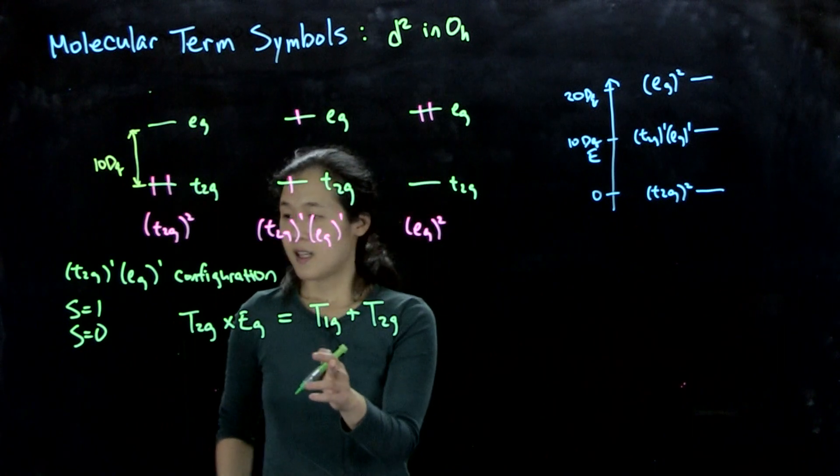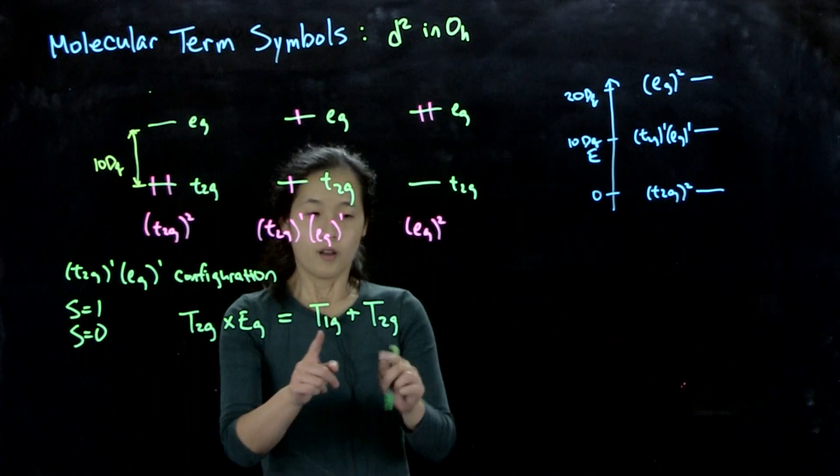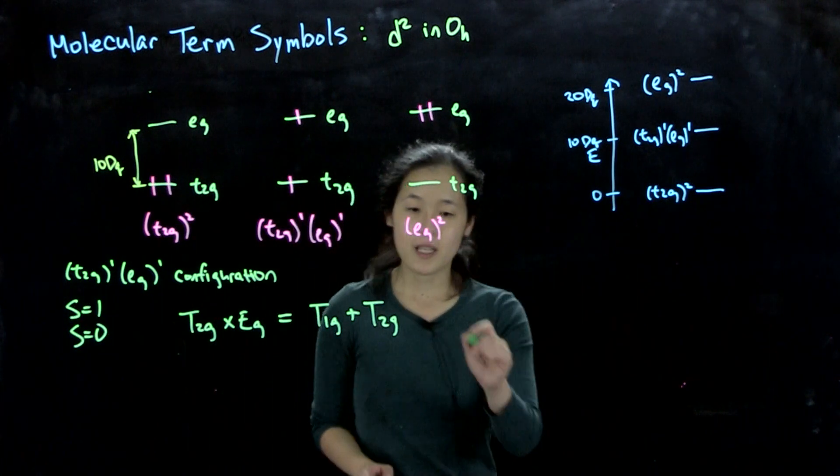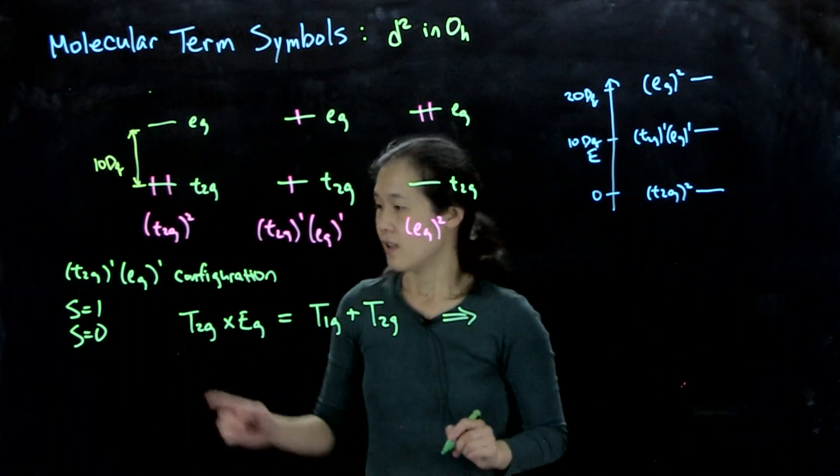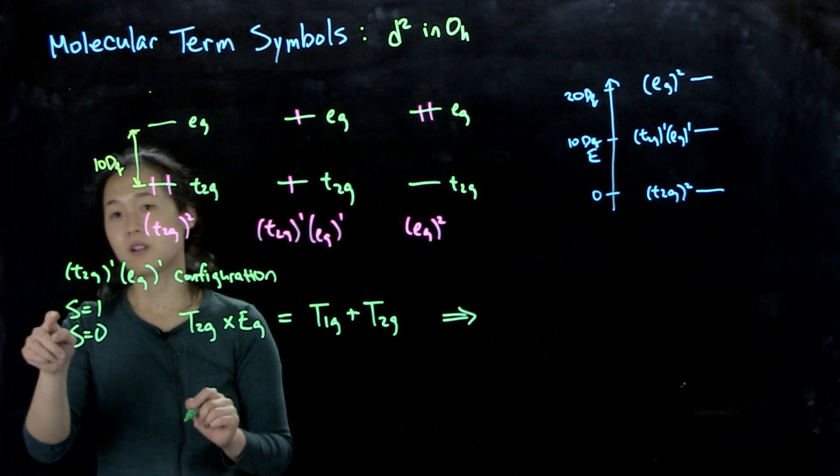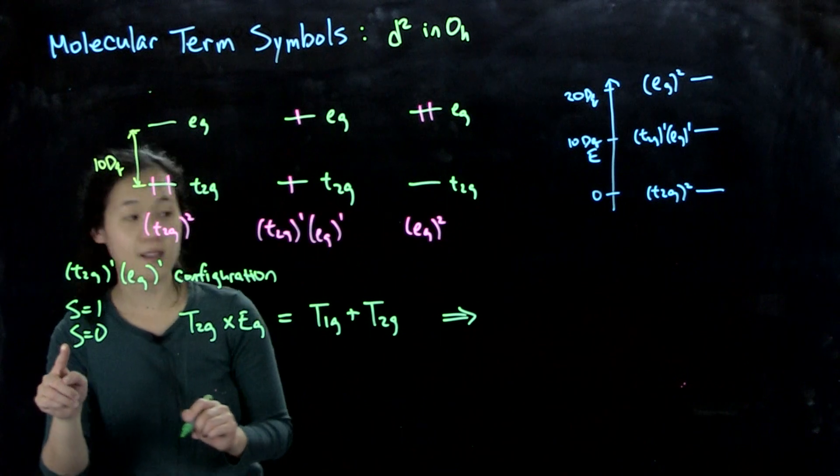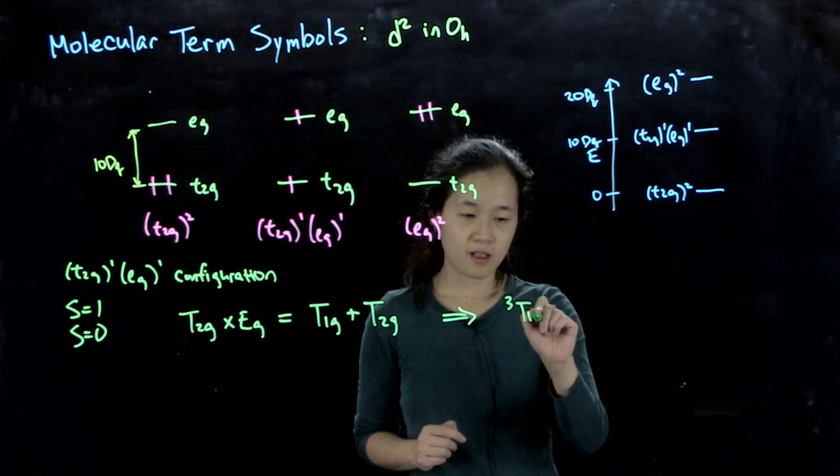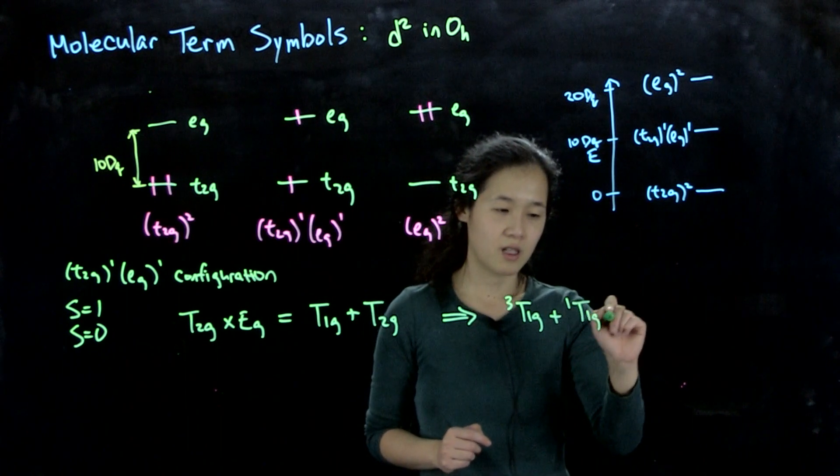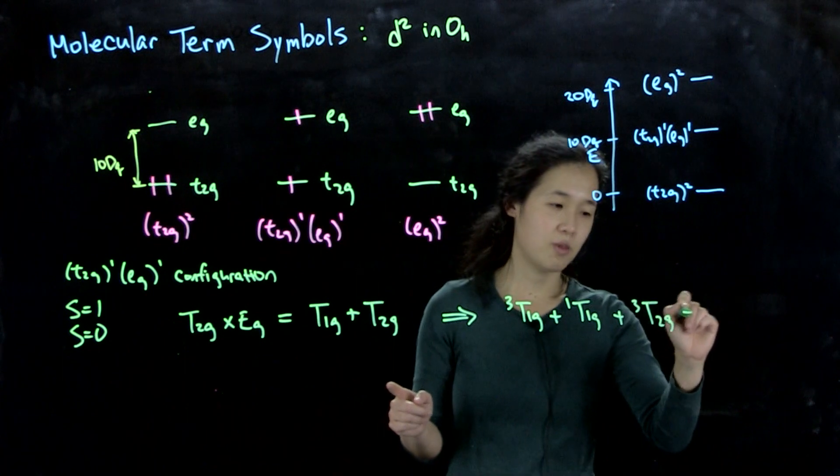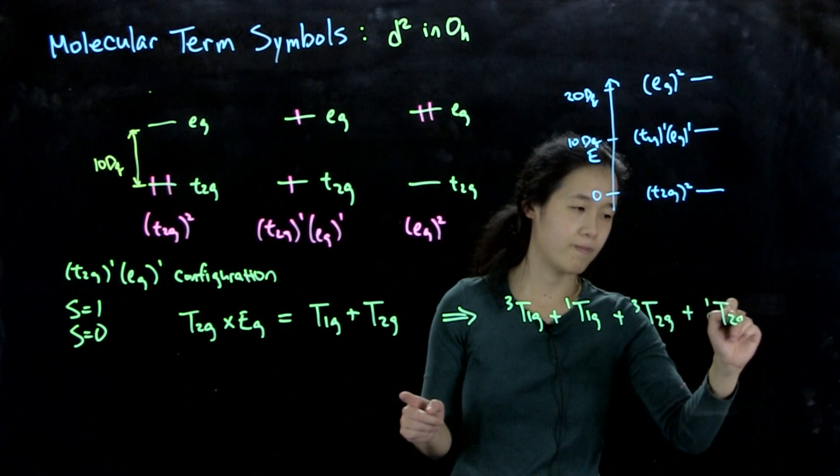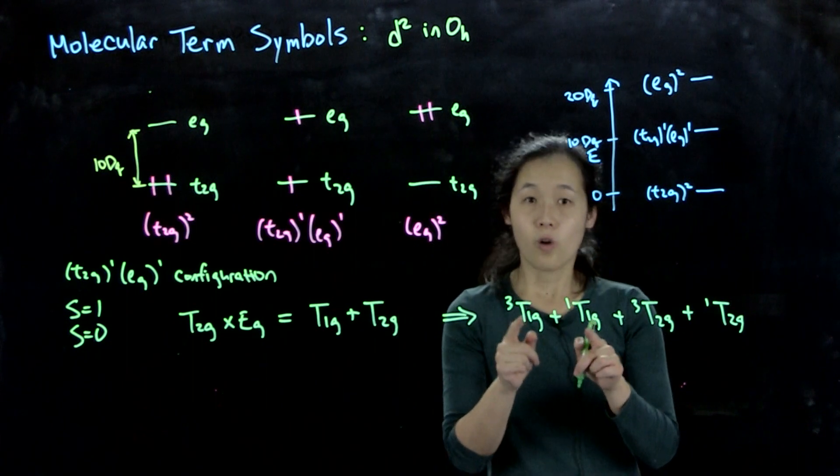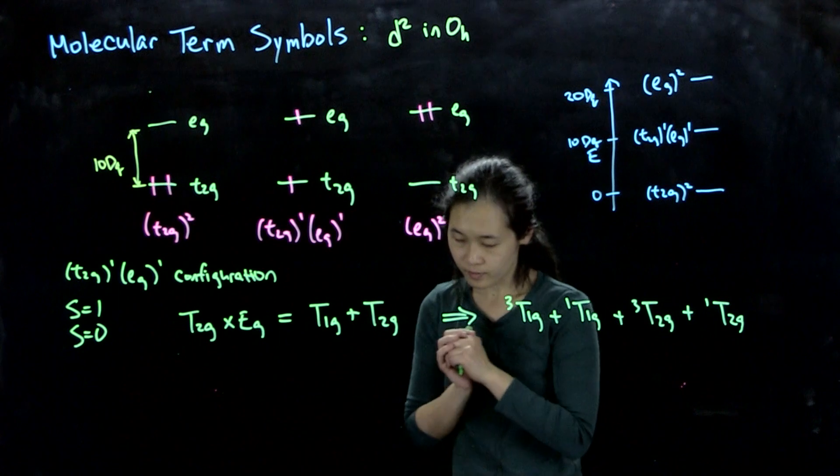And what this means is that then we can get out our spin terms. We have these two possible spin states for each of them. So what this means is that 2s plus 1 is going to be a triplet state for spin equals 1. Spin equals 0 again is a singlet state. So the final terms that we have are going to be triplet t1g plus singlet t1g plus triplet t2g plus singlet t2g. Because we have triplet and singlet possibilities for each of our orbital combinations.